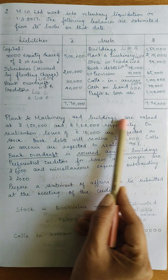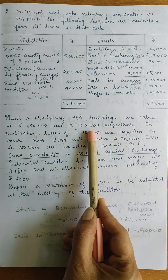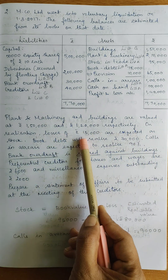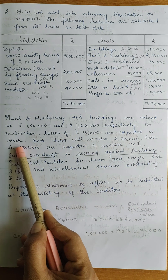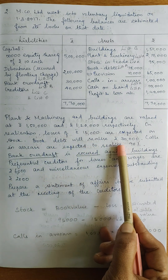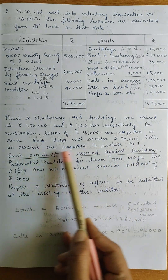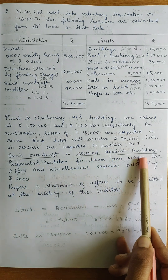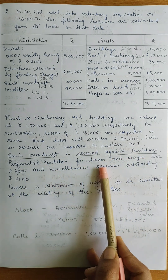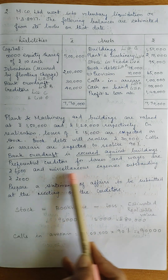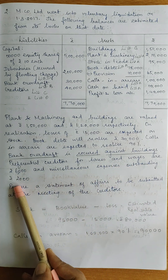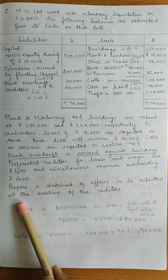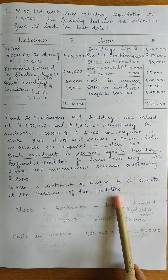Plant and machinery and buildings are valued at Rs. 1,50,000 and Rs. 1,20,000 respectively on realization. Losses of Rs. 15,000 are expected on stock. Book debts will realize Rs. 70,000. Calls in arrears are expected to realize 90%. Bank overdraft is secured against buildings. Preferential creditors for taxes and wages are Rs. 6,000 and miscellaneous expenses outstanding Rs. 2,000. Prepare a statement of affairs to be submitted at the meeting of the creditors.